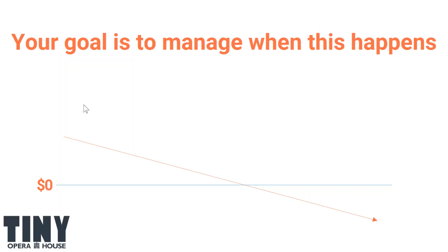There's no award for holding onto the most cash in this business. Our goal is always to spend all of our money eventually — people give it to us to execute the impact they're supporting. We need to have enough money to keep raising and keep spending and keep having the impact we want. So keeping this crossing point of when we run out of money far enough away that we're not panicked, but close enough that we feel like we're really activating the money we've been entrusted with by our donors — in a way that supports our goals of changing the community.